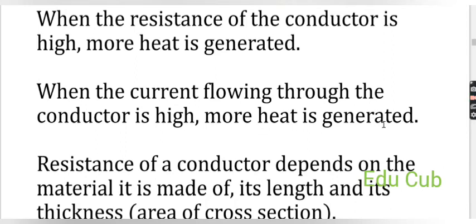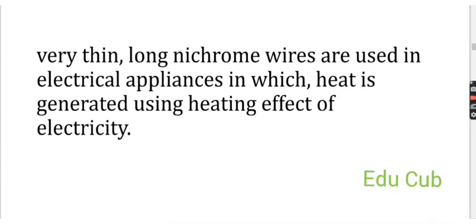The resistance of a conductor depends on three factors: the material it is made of, its length, and its thickness — which means the area of cross-section. So very thin, long nichrome wires are used in electrical appliances in which heat is generated using the heating effect of electricity.